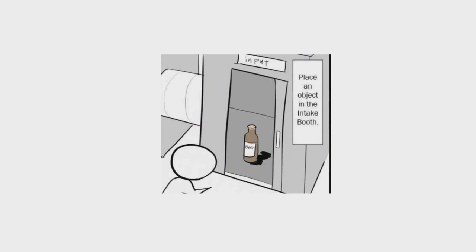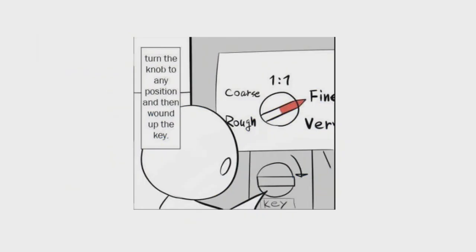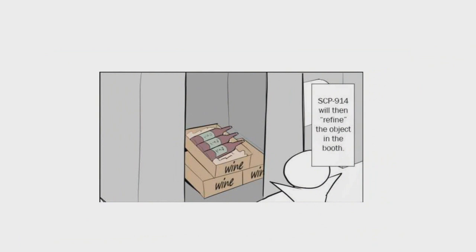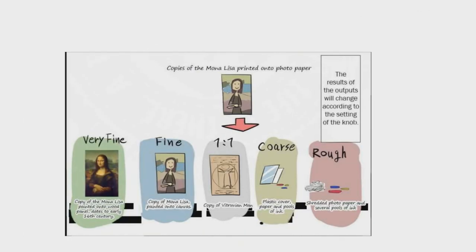Place an object in the intake booth. Turn the knob to any position and then wind up the key. SCP-914 will then refine the object in the booth. The results of the outputs will change according to the setting on the knob.